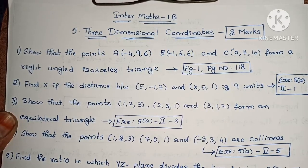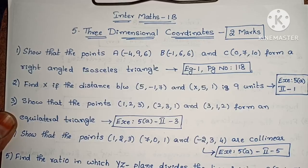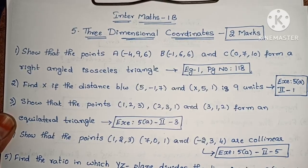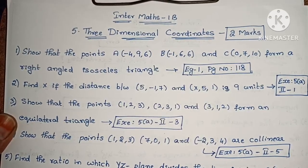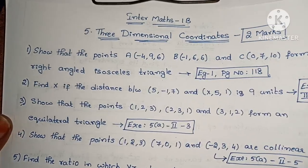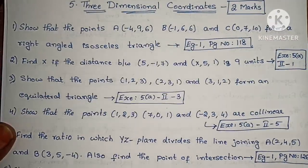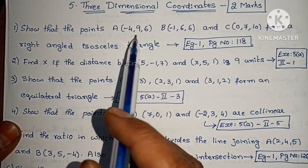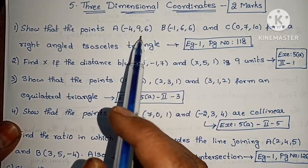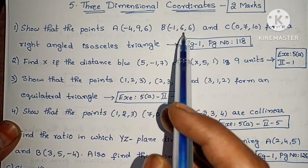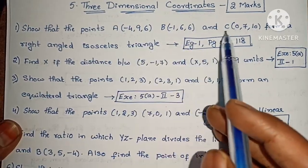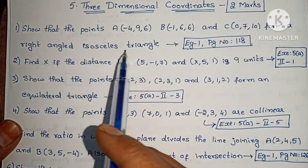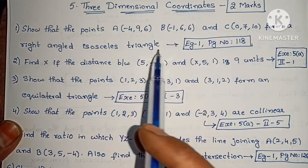I have already explained these questions and solutions — link in the description. Let's start with the first one: Show that the points A(4,9,6), B(1,6,6) and C(0,7,10) form a right-angled isosceles triangle.